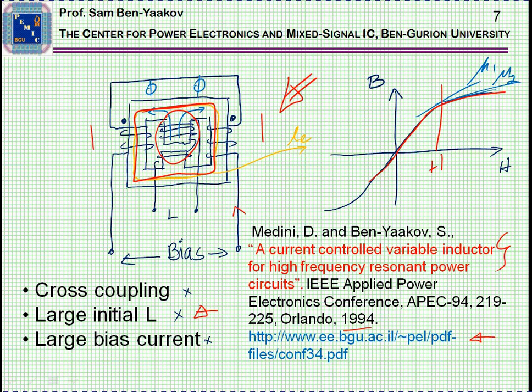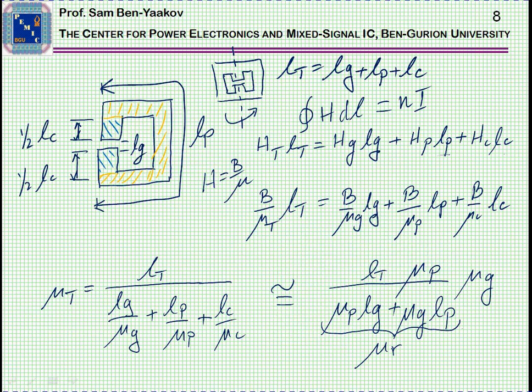This actually solves the cross-coupling effect, the problem of large initial inductance, and the large bias. Next, I'm going to carry out some mathematical derivation to show the effect of this bias on the total permeability, or the relative permeability of this core.